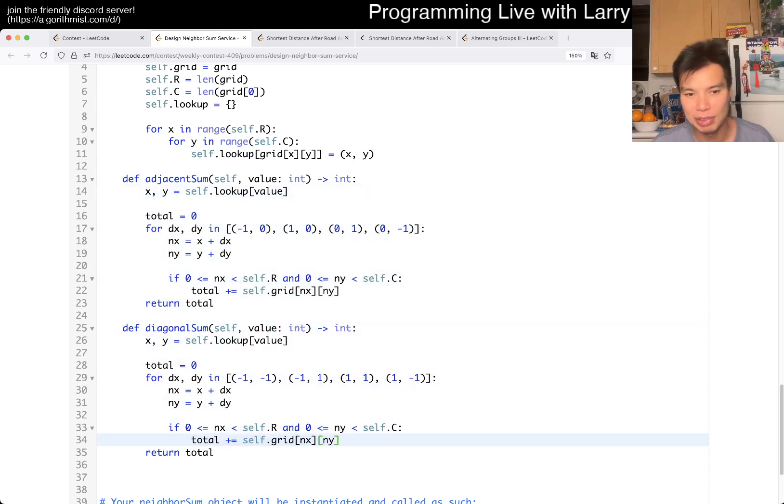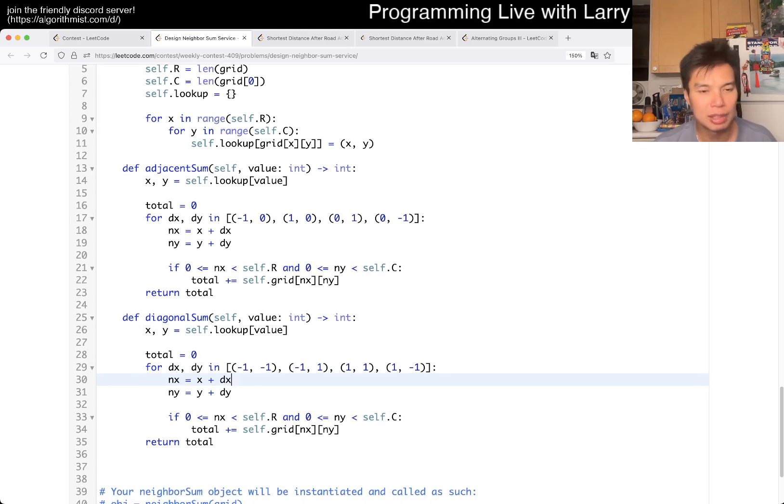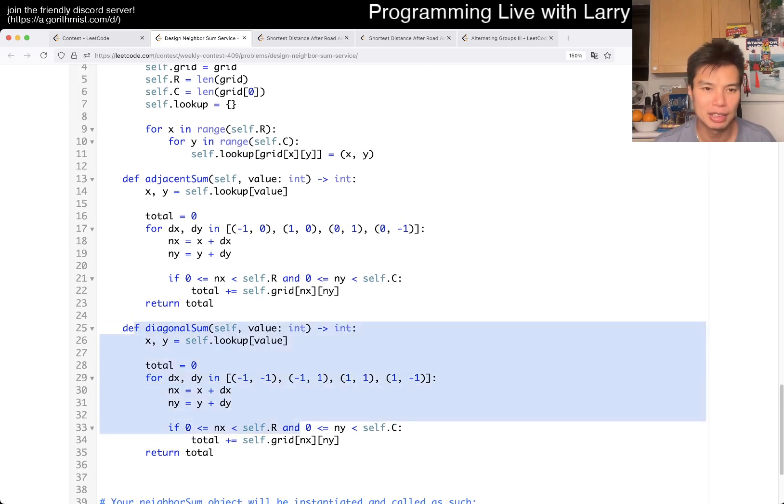Diagonal is going to look exactly the same, except for the dxdy. Here, then now we have four diagonals, one at a time. You could kind of just make sure you enumerate all four and correctly, obviously. And you should get it. And that's pretty much the idea.